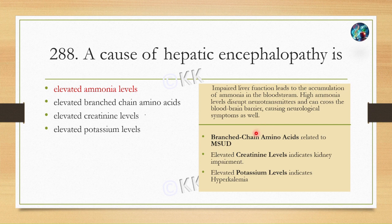Regarding branched-chain amino acids, a related question is associated with maple syrup urine disease. Elevated creatinine levels indicate kidney function impairment, and elevated potassium levels indicate hyperkalemia.